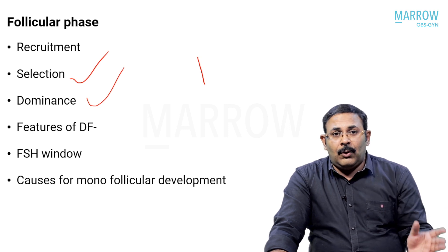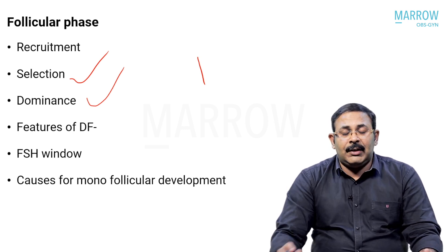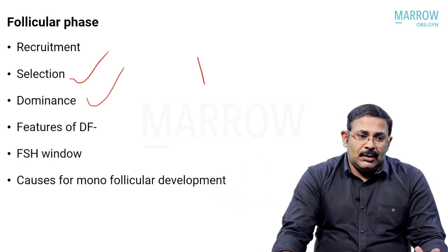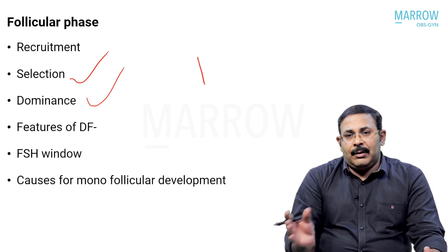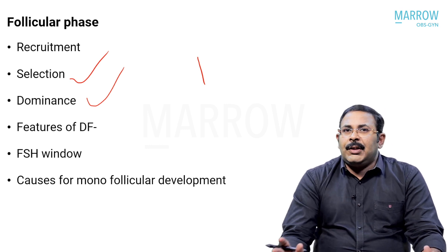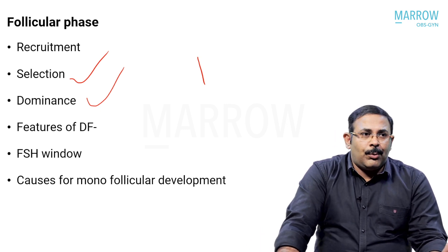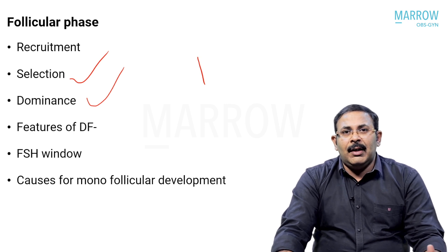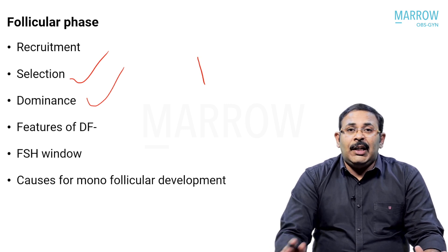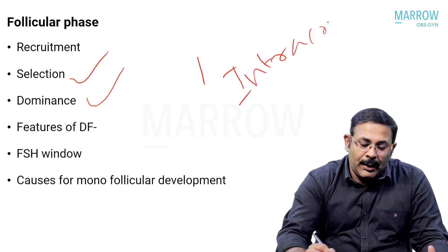Recruitment, selection, and dominance are the classical phases of folliculogenesis. Primordial follicles are recruited and become ready to be acted upon by FSH; they are called pre-antral and antral follicles. Once reaching the antral follicle stage, FSH can act upon them, causing development, and ultimately one follicle will be ovulated. This recruitment is not under the control of any gonadotropins - FSH, LH, or whatever hormones come from the hypothalamus or pituitary cannot alter recruitment.